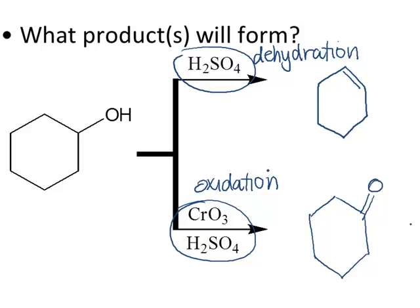Did you notice that sulfuric acid was the catalyst for dehydration as well as the catalyst for oxidation? That presents an interesting problem, because if you don't provide enough of the chromate oxidizing agent or don't have perfect reaction conditions, you might actually make both of these products when you only intended to get one. Remember that your textbook has a lot more practice on both oxidation and dehydration reactions of alcohols.